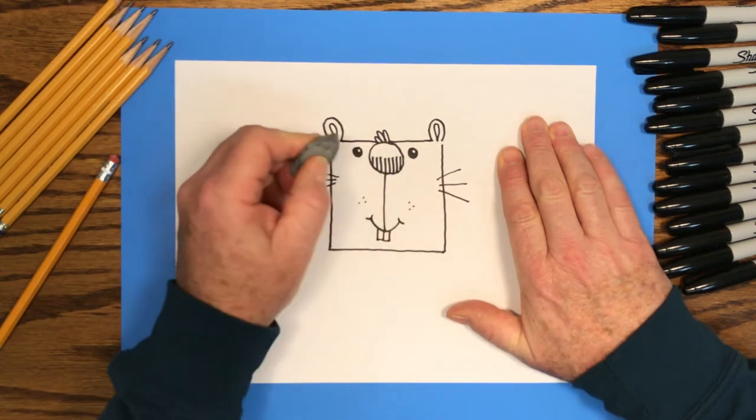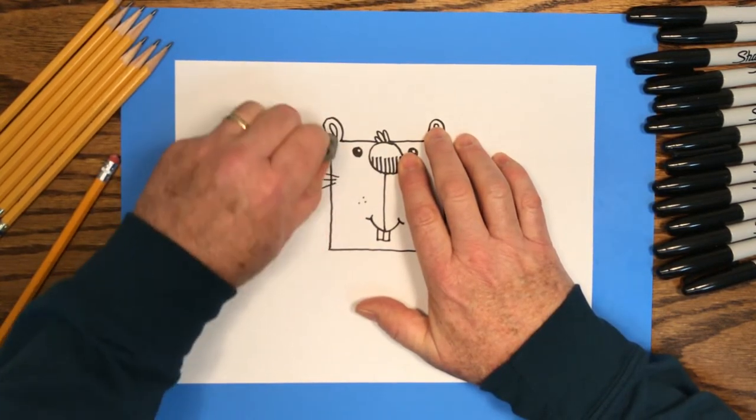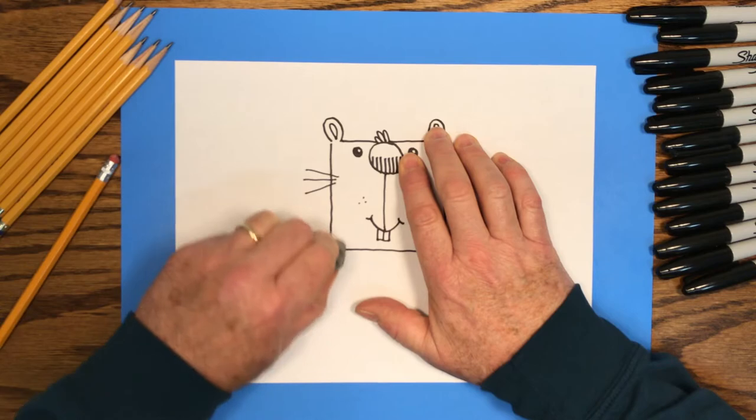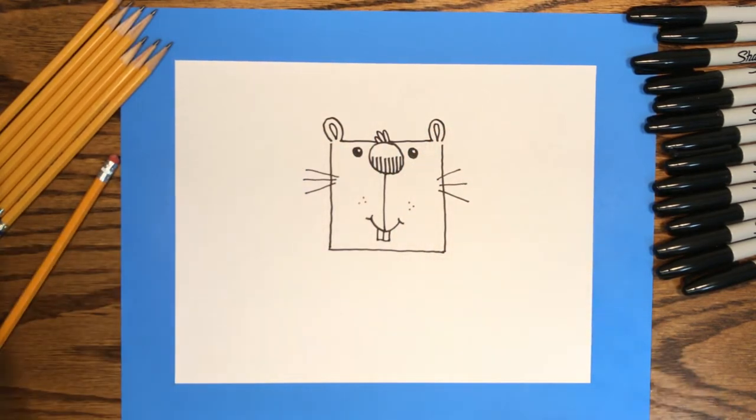And now we have a nice black marker drawing of our hamster, and we can start adding some color. I'll speed up this part of the video so you can see how I colored my hamster, but you might want to take your time. Have fun!